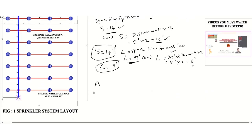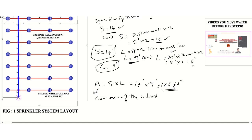The area coverage for one individual sprinkler is S by L. S is 14 feet and L is 9 feet, so the total area is 126 square feet. The area of one individual sprinkler is 126 square feet.